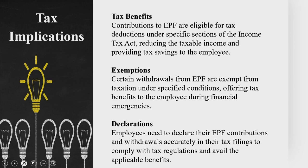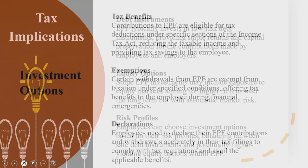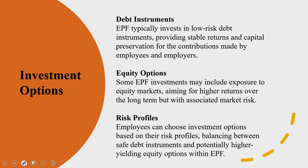When looking into DLIS, the DLIS benefit received by the nominated beneficiary upon the employee's death is generally exempt from income tax. This ensures the financial assistance actually reaches the family without any tax burden. Regarding exemptions, withdrawal before five years of continuous service — for example for medical emergencies — may make a portion of EPF corpus taxable. Also, if the employee's contribution to EPF exceeds the statutory limit, the interest earned on that excess amount may be taxable.